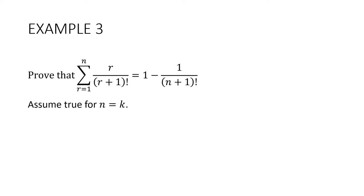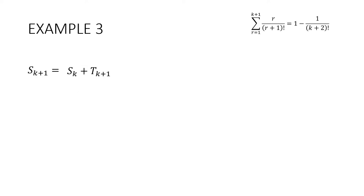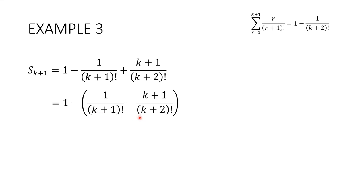Assume it's true for n equals k: the sum of k terms equals 1 minus 1 over k plus 1 factorial. Now prove it true for n equals k plus 1 — the sum of k plus 1 terms equals 1 minus 1 over k plus 2 factorial. The sum of k plus 1 terms equals sum of k terms plus the k plus first term, where the k plus first term comes from substituting k plus 1 wherever r appears. The minus sign is going to cause some grief, so I'm going to factorize it out to work inside the brackets to turn 1 over k plus 1 factorial into 1 over k plus 2 factorial.